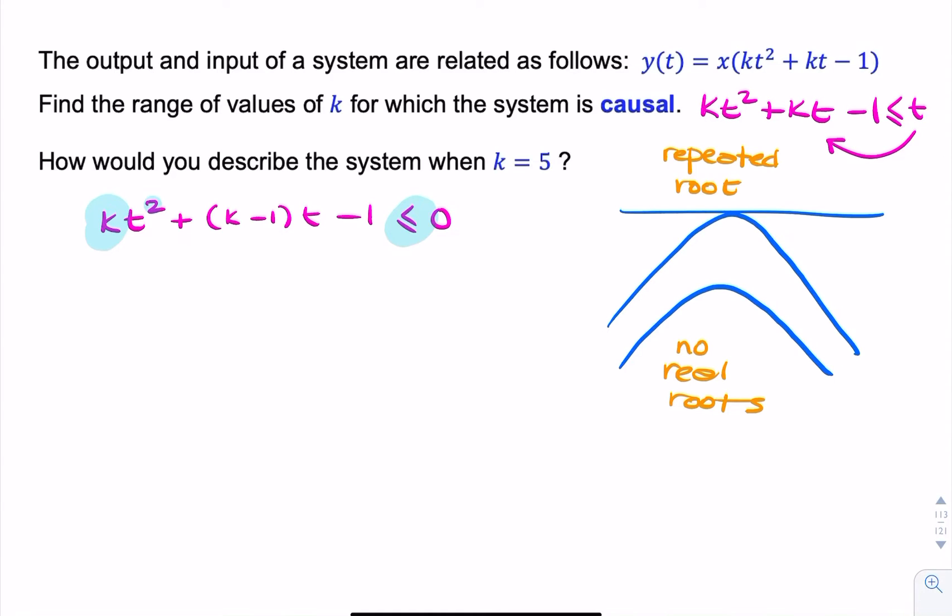And we can quantify this criteria by saying that the discriminant, that is b squared minus 4ac, has to be less than or equal to 0.